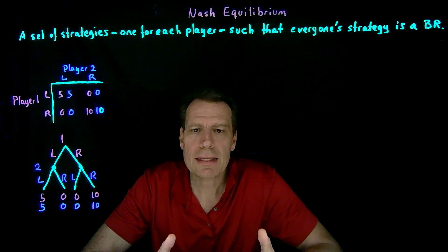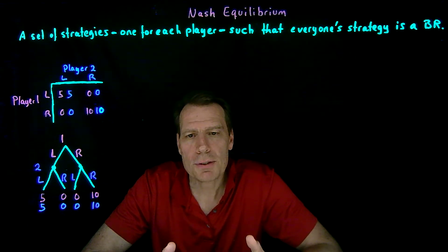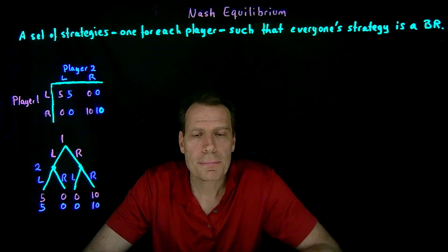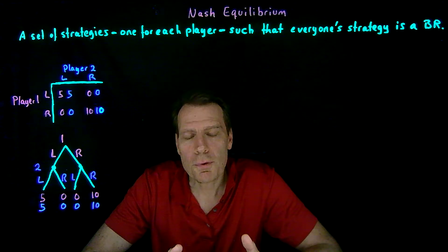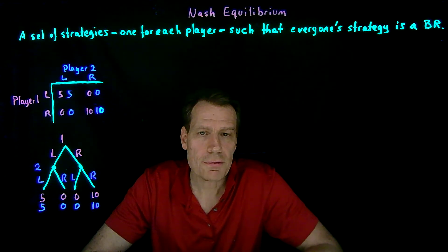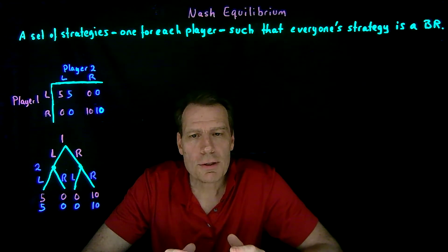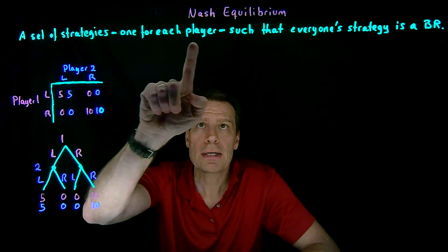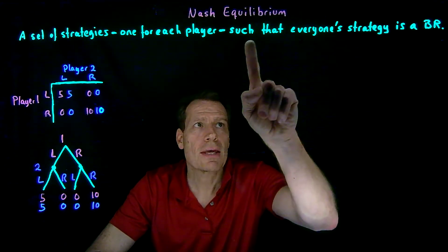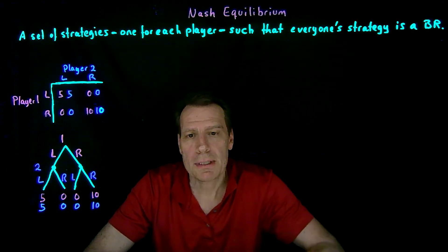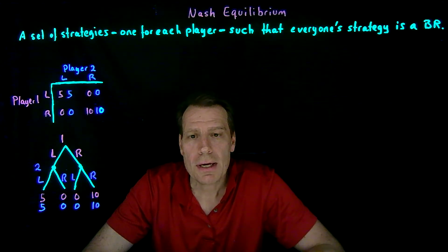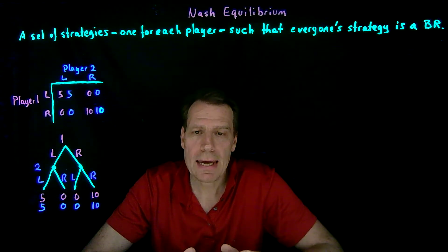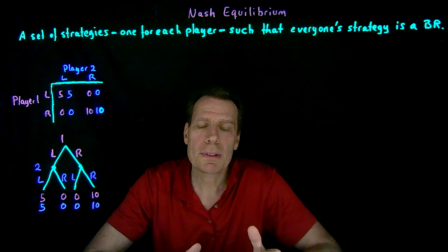That's called a Nash equilibrium. It's named after the mathematician John Nash, who won a Nobel Prize in economics for deriving this idea. You may have seen the movie A Beautiful Mind, which is about John Nash's life. A Nash equilibrium is formally defined as a set of strategies, one for each player, such that everyone's strategy is a best response to everybody else — everybody is doing the best they can given what everybody else is planning to do.